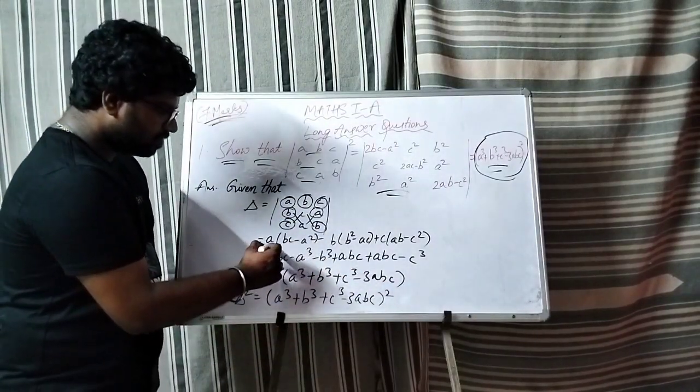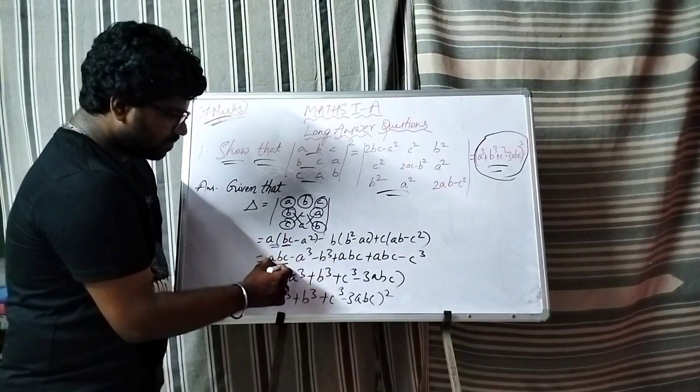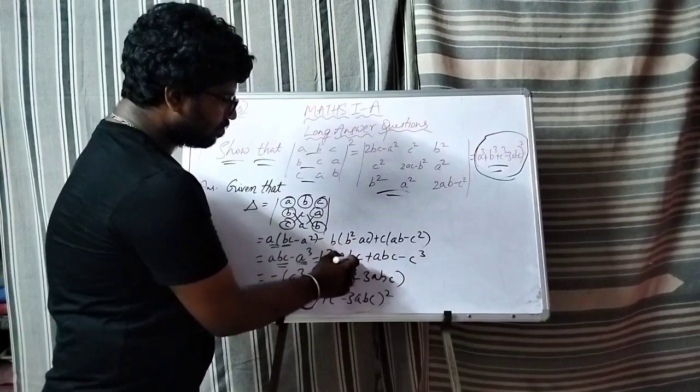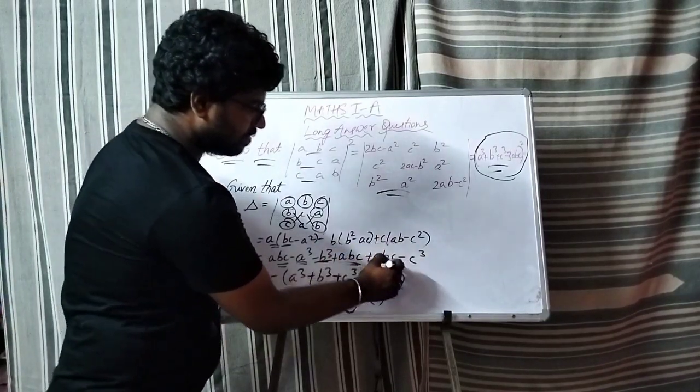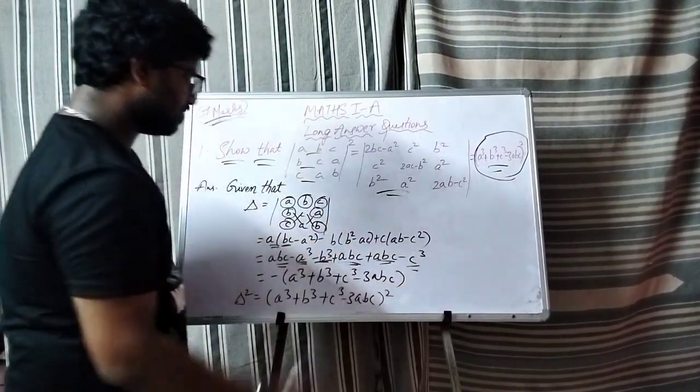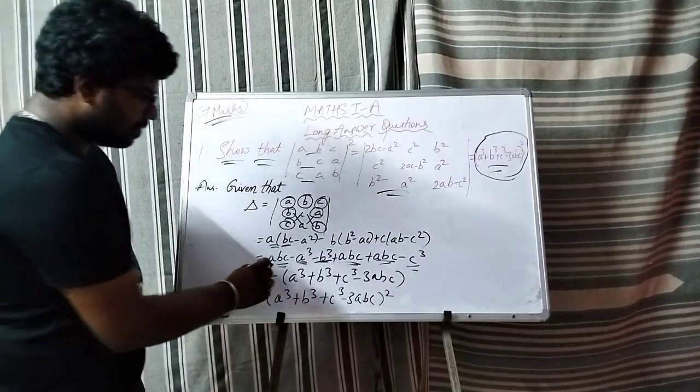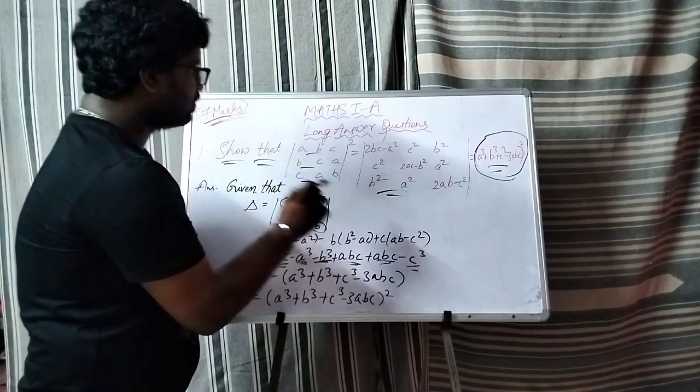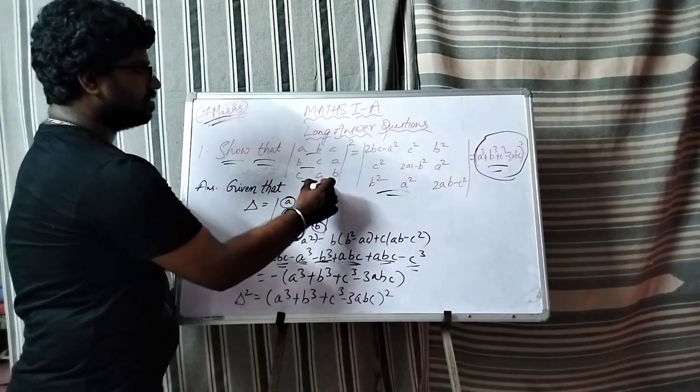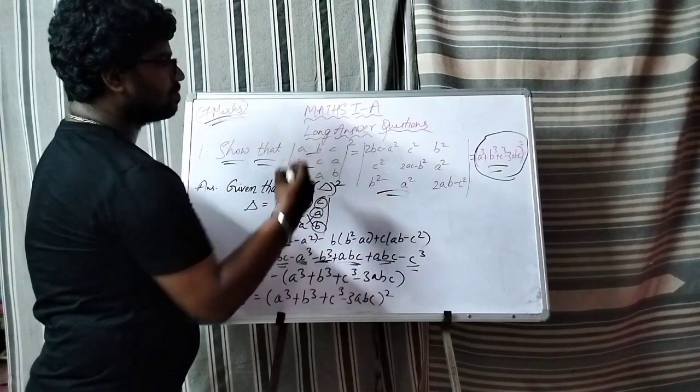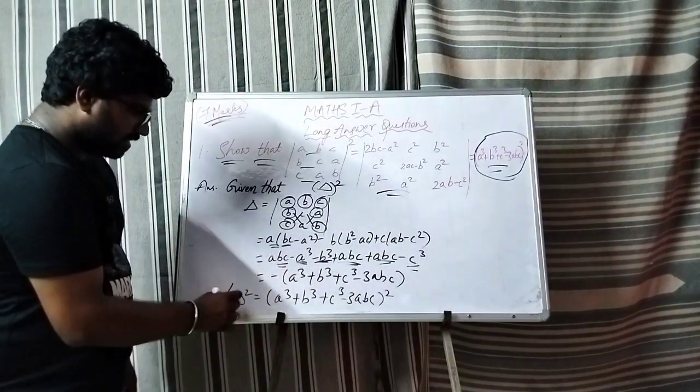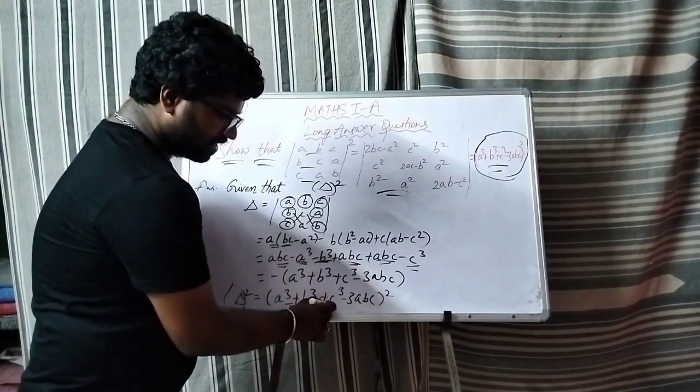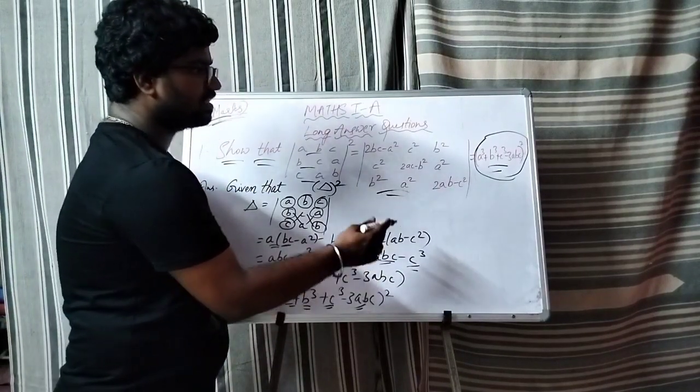Now taking minus common, we get a cube plus b cube plus c cube minus 3abc. This is the a cube plus b cube plus c cube minus 3abc whole square.